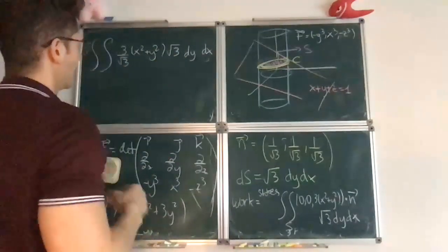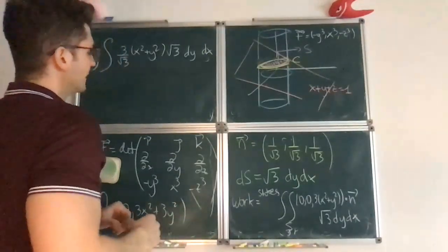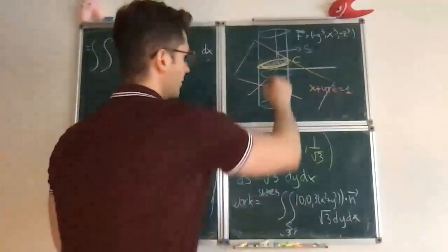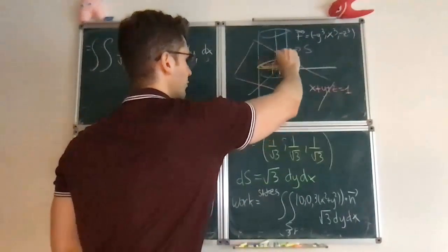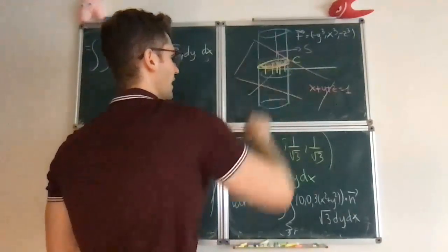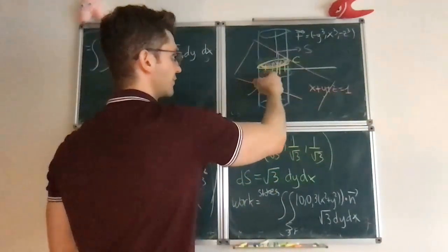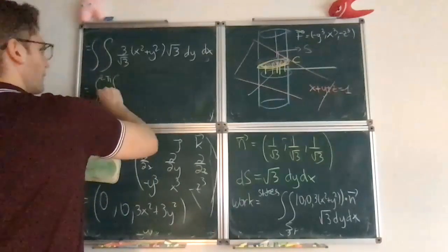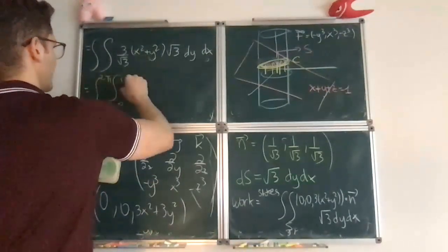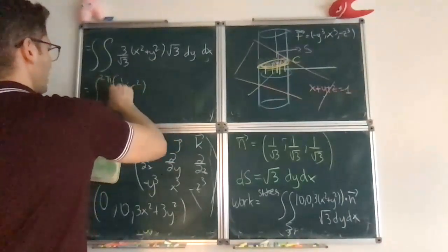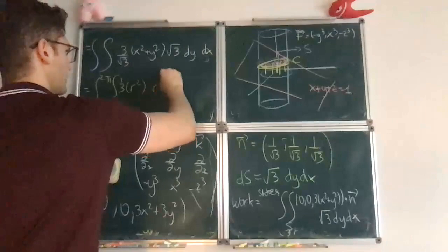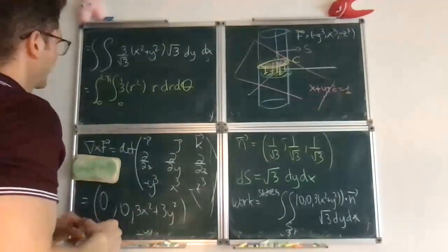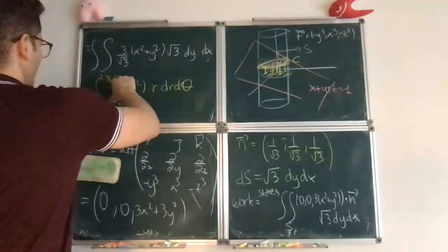And now you have to worry about the bounds that y and x take. But notice that, as I was saying, every point here is specified by x and y, so every point is in correspondence with its shadow. And so the bounds for x and y are really the bounds for the unit disk. And so if you switch to polar coordinates, you can say this is from 0 to 2π, from 0 to 1, this becomes r squared. The root 3 is cancelled, so you get 3r squared, and then this changes to r dr dθ. So what I'm saying is that really the bounds are obtained by looking at the shadow on the xy plane.